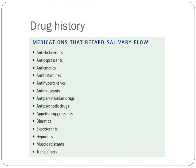Drug history related to reduced salivary flow includes anticholinergics, antidepressants, antiemetics, antihistamines, antihypertensive drugs, antipsychotic drugs, diuretics, muscle relaxants, and anxiolytics — all of which can retard salivary flow from the salivary glands.